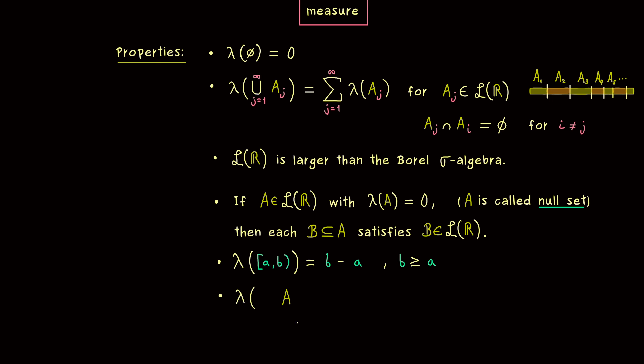It tells us that if we have a given measurable set A, and we shift it by a point X, then this translation does not change the measure of A at all. So this holds for all points X in R, and for all measurable sets A. So this is the property we call translation invariance. And you can remember that, because it also holds for the n-dimensional Lebesgue measure later.